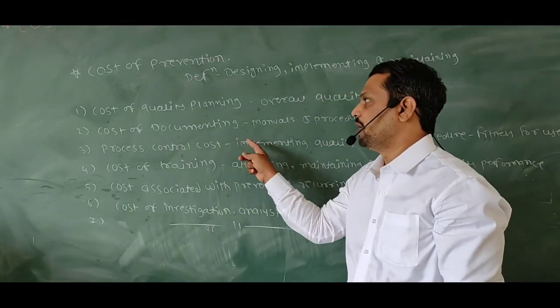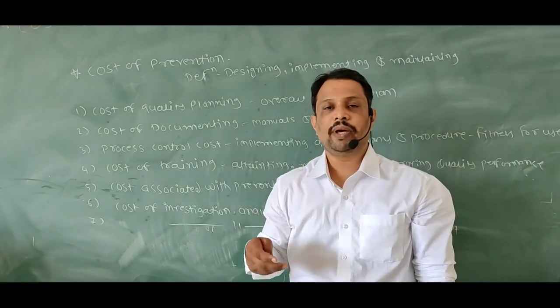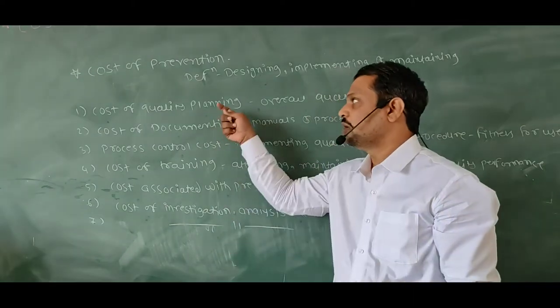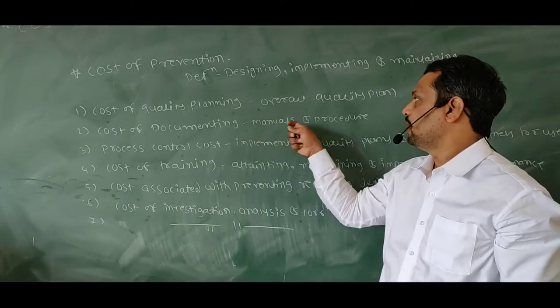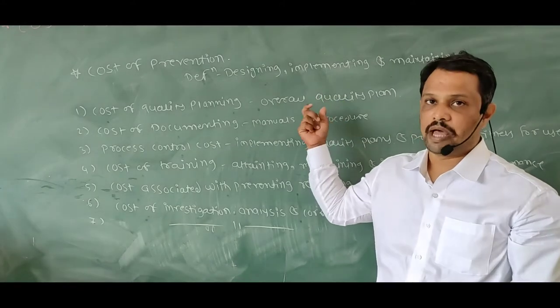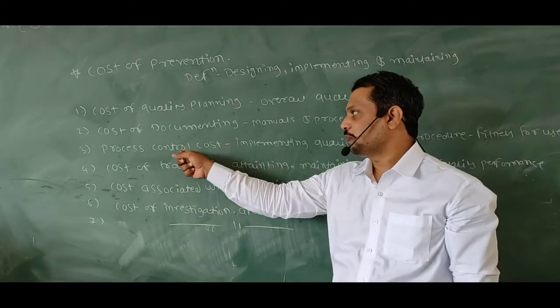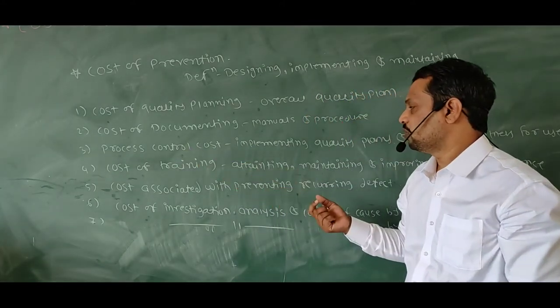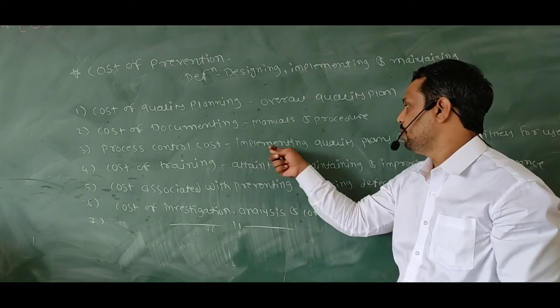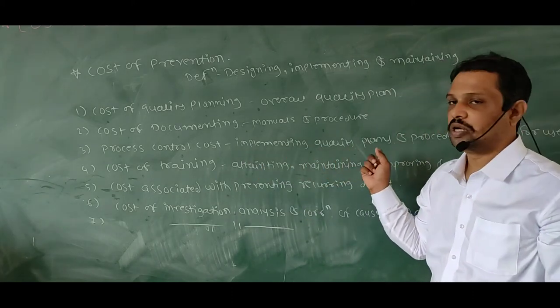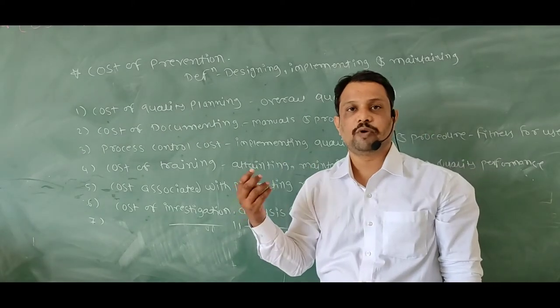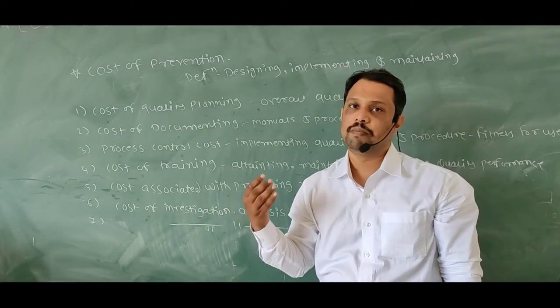Cost of documenting. In this you have to prepare a document to achieve your plan, and you have to prepare manuals and procedures to achieve your plan. After that, process control cost. In process control cost, the cost associated with implementing quality plans and procedures for obtaining a product which fits your purpose.